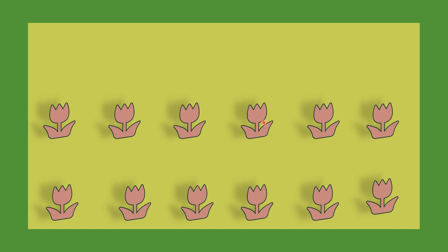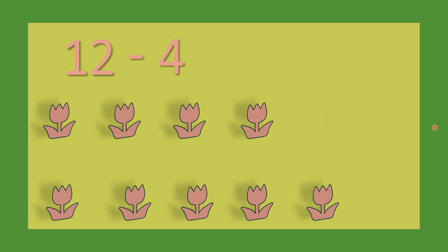How many flowers are there? 1, 2, 3, 4, 5, 6, 7, 8, 9, 10, 11, 12. 12 flowers. We will write 12 minus 4. Minus 4 means 4 flowers take away. Let's see. 1 flower take away, 2 flowers take away, 3 flowers take away, 4 flowers take away. How many flowers are left? 1, 2, 3, 4, 5, 6, 7, 8. 8 flowers are left. So equals to 8. 12 minus 4 equals to 8.